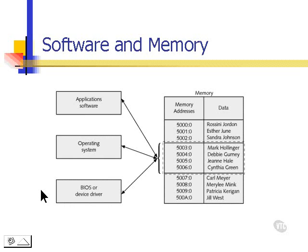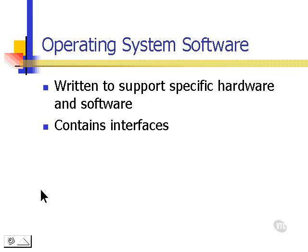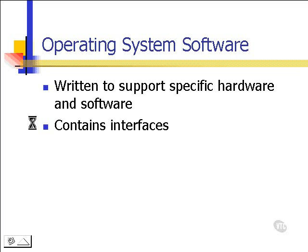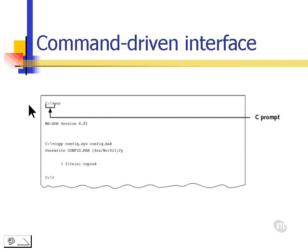Let's focus on operating system software more closely. Operating system software is written to support specific hardware and software, and it contains interfaces. A command-driven interface is usually indicated with a C prompt. DOS was a program that started with a command-driven interface, and we still use command-driven interfaces to do some configuration, especially with TCP/IP configuration in networks.